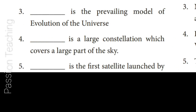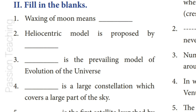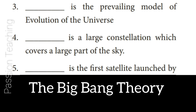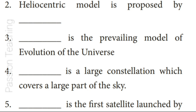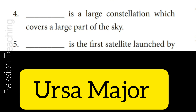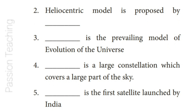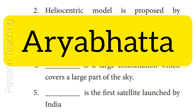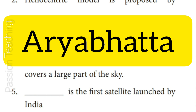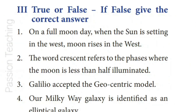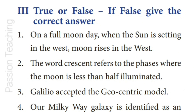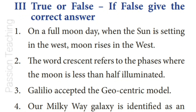Question 3: Dash is the prevailing model of evolution of the universe — Answer: The Big Bang Theory. Question 4: Dash is a large constellation which covers a large part of the sky — Answer: Ursa Major. Question 5: Dash is the first satellite launched by India — Answer: Aryabhata.